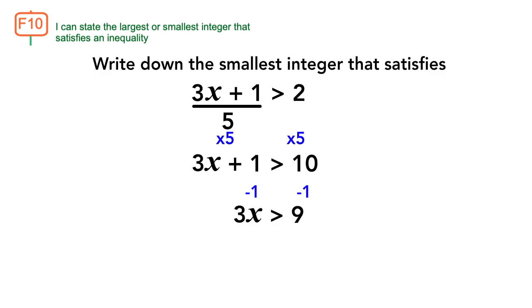Times by 5, subtract 1, and then divide by 3. x is greater than 3. The smallest integer greater than 3 is 4.